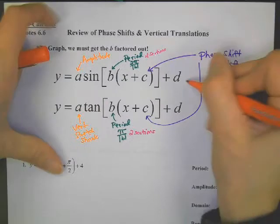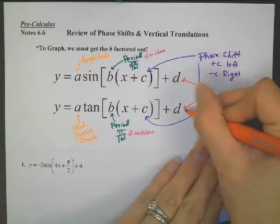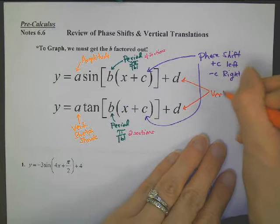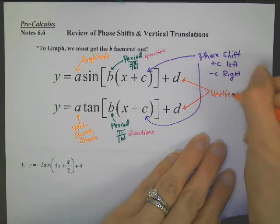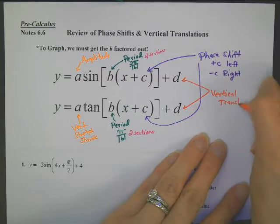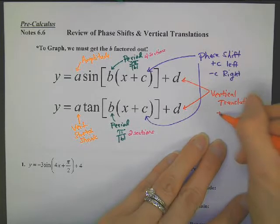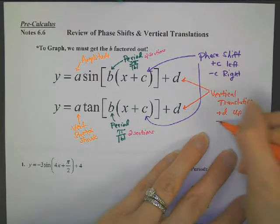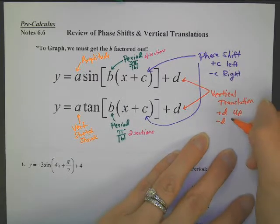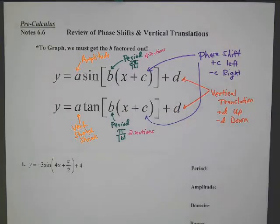The last parameter is D. D for both of these is the same — it is a vertical translation, meaning to slide. If you see plus D, move your graph up; if you see minus D, move it down, just like you'd expect. You have to make sure you get your graphs into this form before you start.